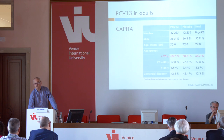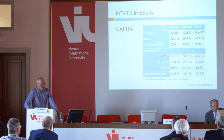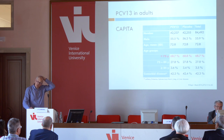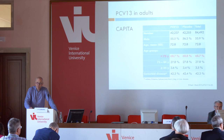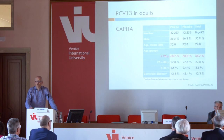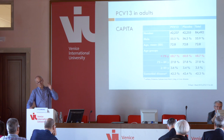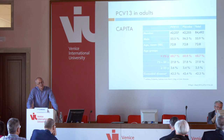The CAPITA trial — it was a randomized controlled trial with a lot of persons in it. But when you look at the age distribution of this study, our older population was rather underrepresented: 85 years and more being only about 3.5% of the population. So the question is, will this answer our questions about the effect of a conjugate vaccine in our older population or the population at risk?